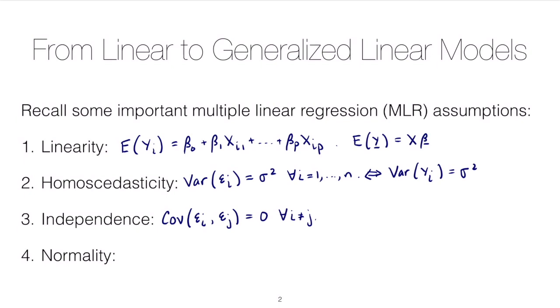Now both of these assumptions, assumptions two and three, can be written in matrix vector form. And we could say that the variance of y as a vector is equal to, it'll be a matrix, so it'll be sigma squared times i n, where i n is the n by n identity. It has zeros on the off diagonals and ones on the diagonals. And so when you multiply that by sigma squared, you have sigma squared on the diagonal. So this captures both the constant variance assumption and the independence assumption together.